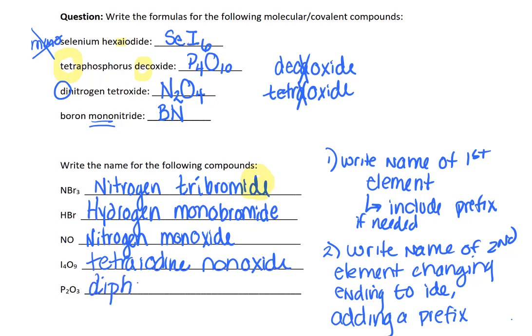The final one here has two phosphorus, so diphosphorus. Watch your spelling on phosphorus. Phosphorus, fluorine, and sulfur are the three most misspelled elements on the periodic table. And then trioxide. Notice how here you do not drop double vowel combinations if they include an I.